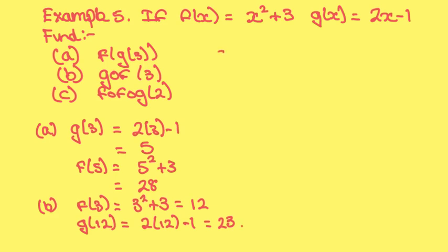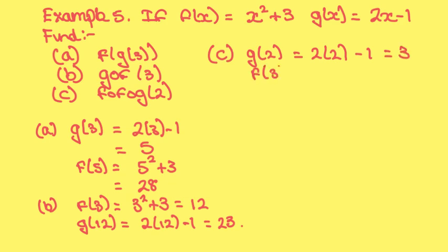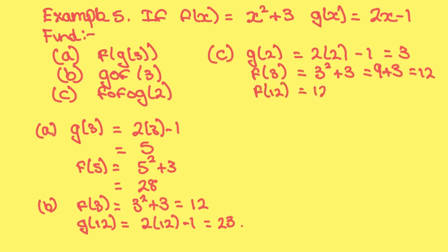For part c, we have a triple composite function. First do g of 2, which equals 2 times 2 minus 1, which equals 3. Then put 3 into f, so f of 3 equals 3 squared plus 3, which is 9 plus 3, equals 12. And then do f of 12, which is 12 squared plus 3, which is 144 plus 3, which equals 147.